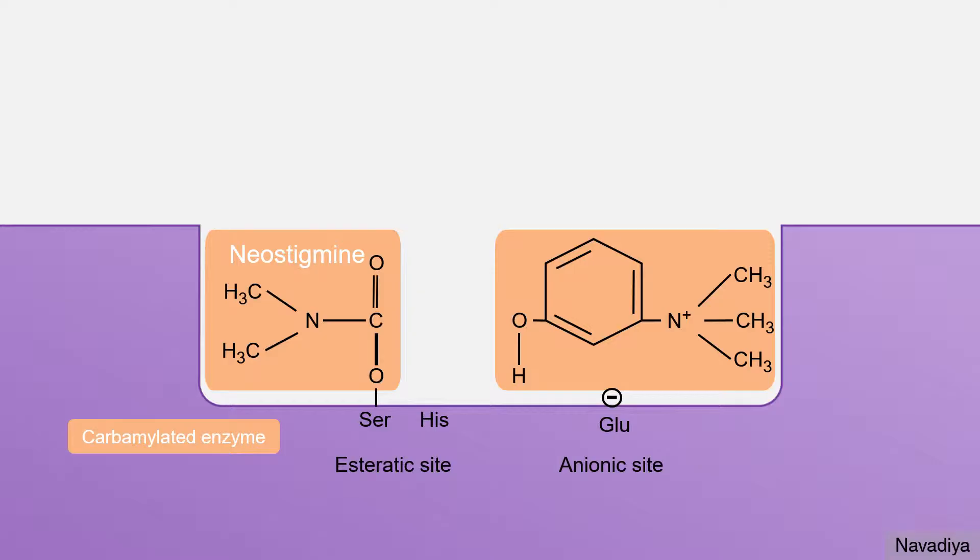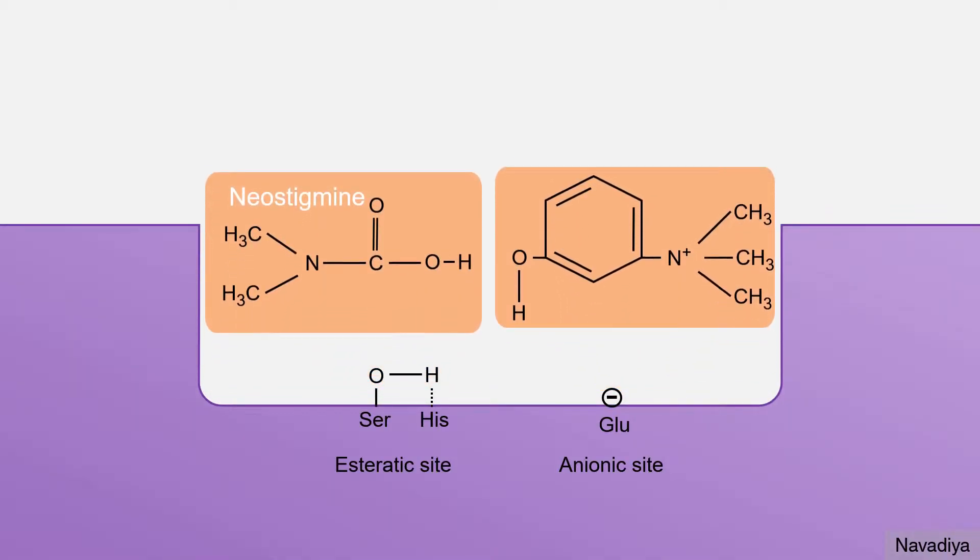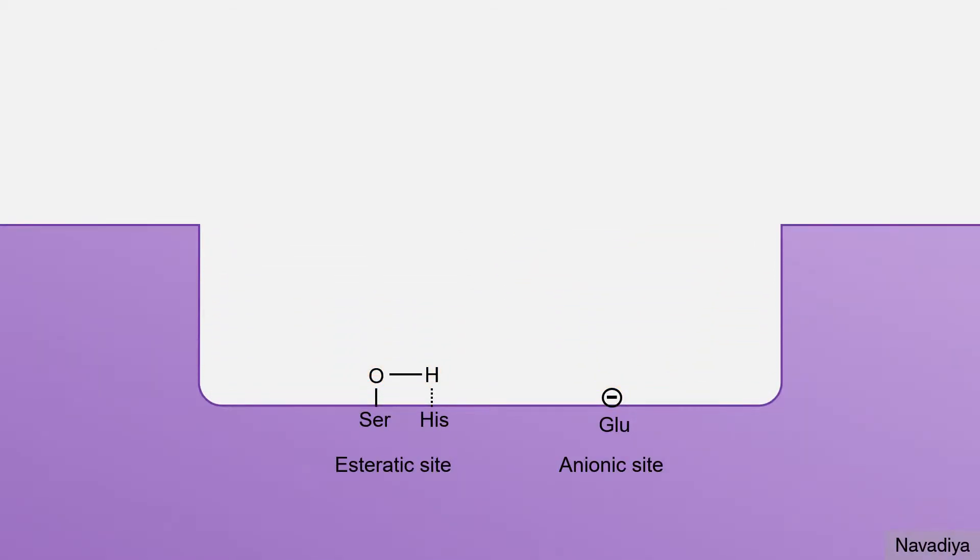As compared to hydrolysis of acetylated enzyme which is a very fast process, hydrolysis of this carbamylated enzyme is a very slow process. Because of which, inhibition lasts for 30 minutes to 6 hours. After this, metabolites diffuse away and enzyme becomes active again.